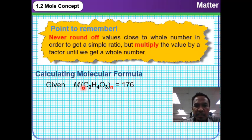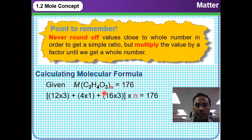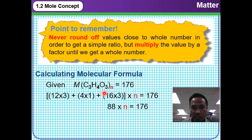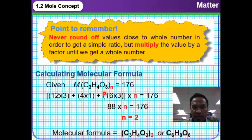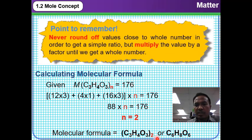By using the relationship between empirical formula and molecular formula — the mass from empirical formula multiplied by N equals the mass from molecular formula — we can determine the value of N. In this case, the value of N equals 2. Therefore, the molecular formula will be C₆H₈O₆.